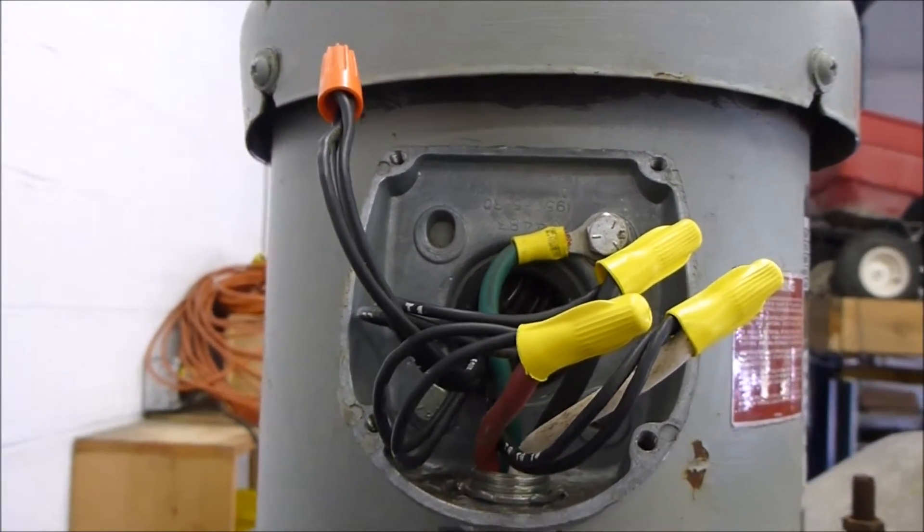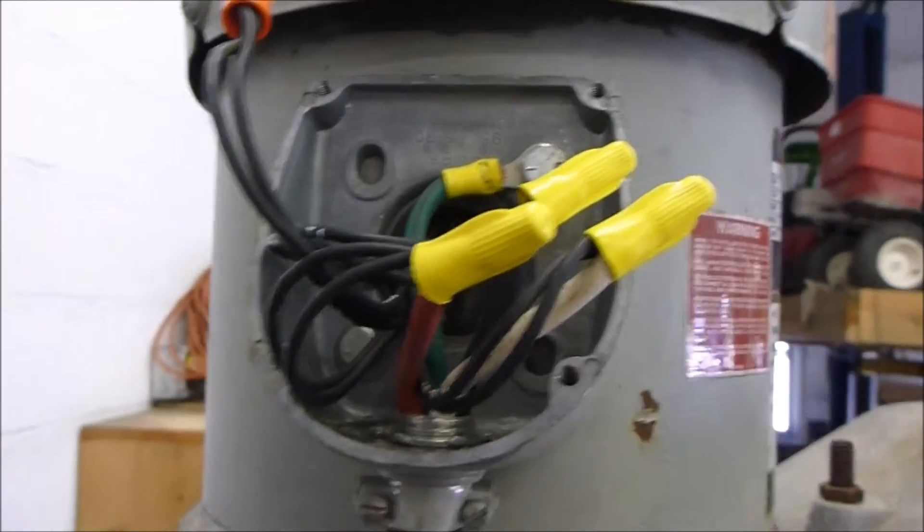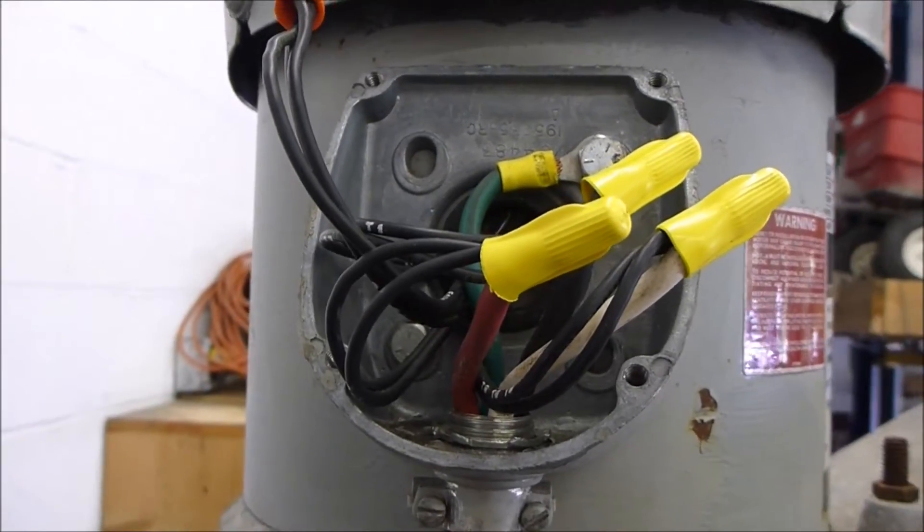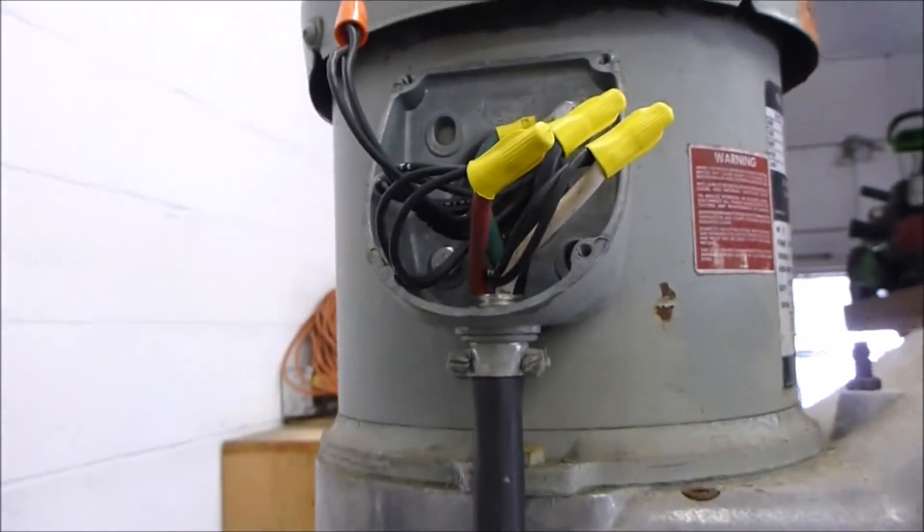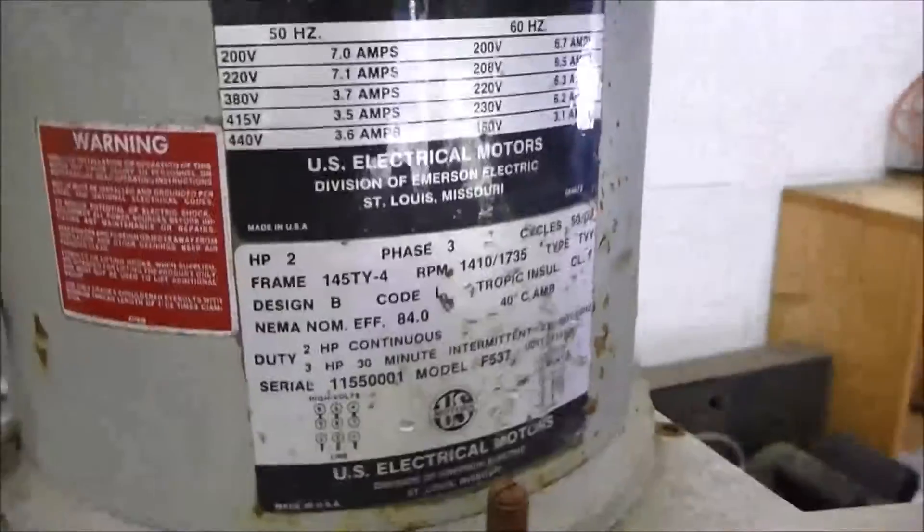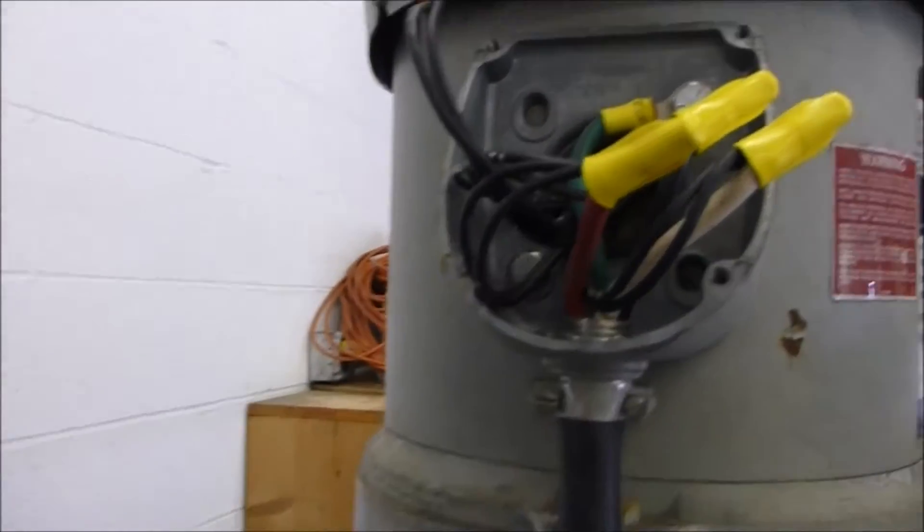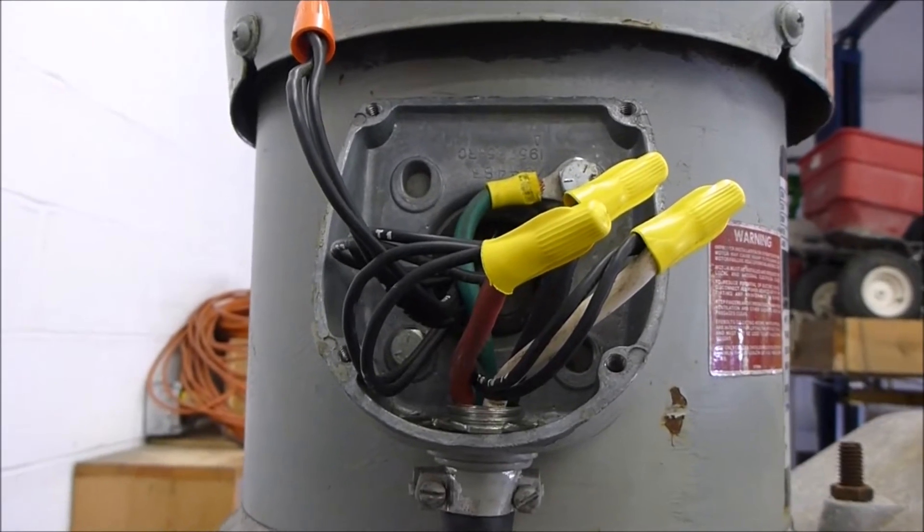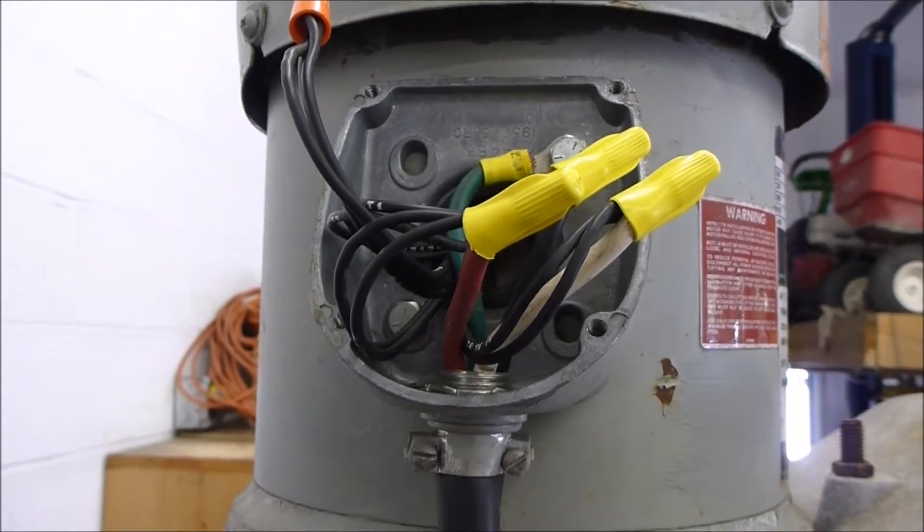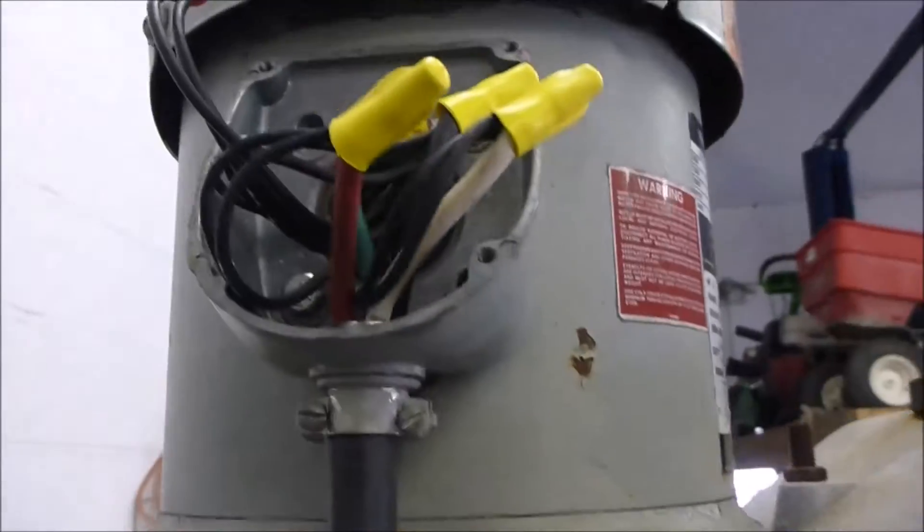I've removed the switches and other things in between the plug and the motor. On the motor, I went ahead and connected it in the low setting. That connects the four, five, and six wires together, the one and seven to the black, the two and eight to the white, and the three and nine to the red.